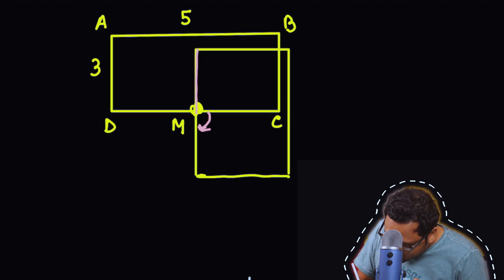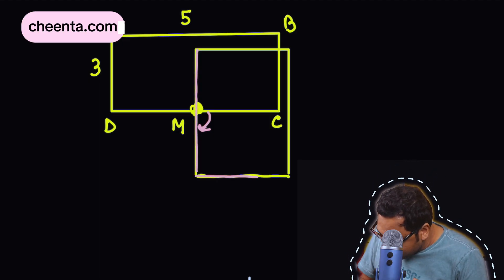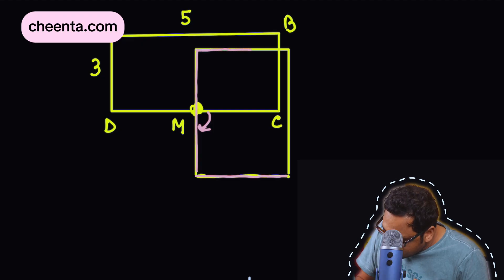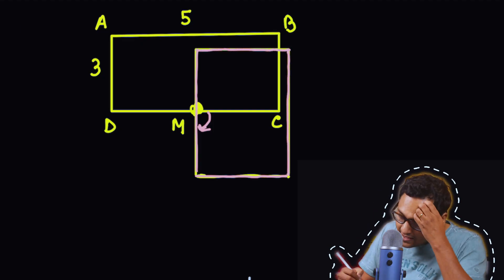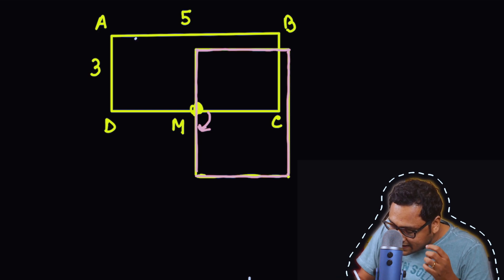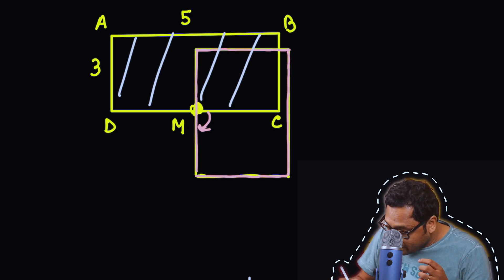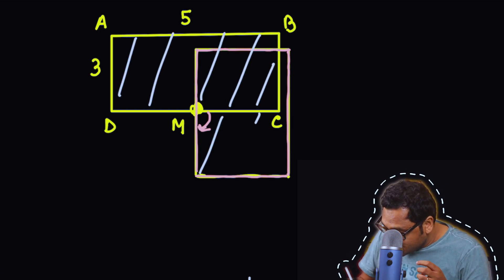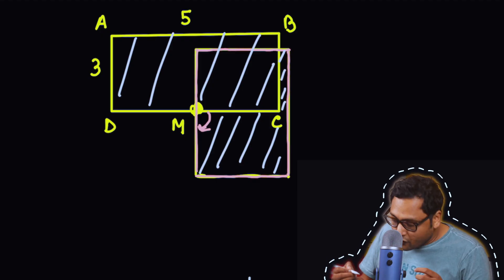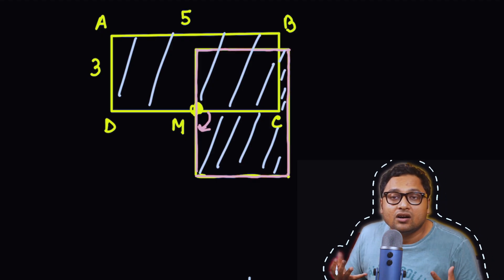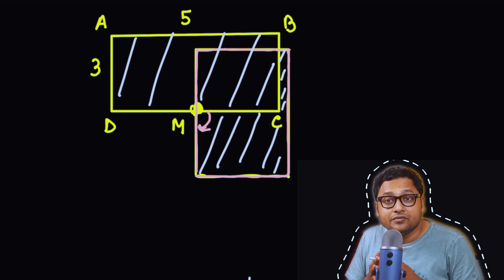Maybe I can draw this rotated rectangle in pink. So now the question is this: if I shade the entire region, what is the area of the shaded region?